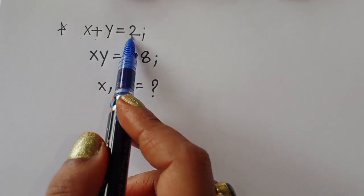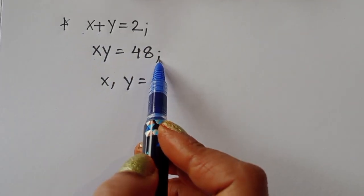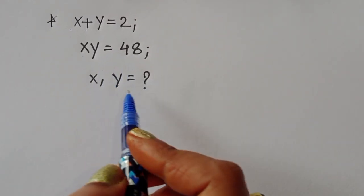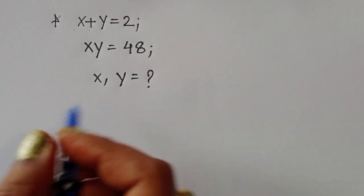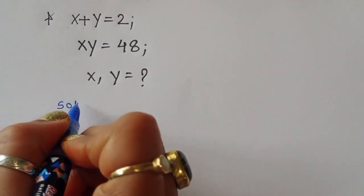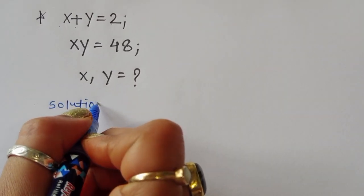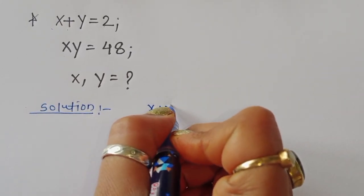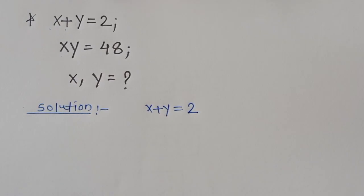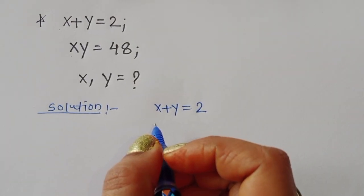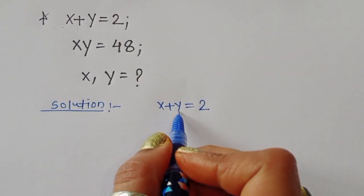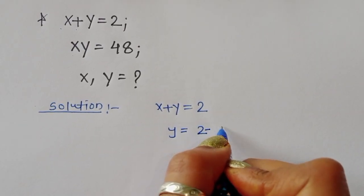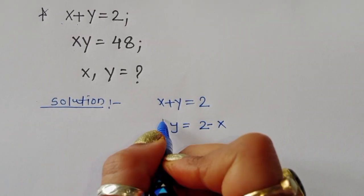The question gives us x plus y equal to 2 and xy equal to 48, and we have to find the value of x and y. Let's see the solution. From x plus y equal to 2, we can write y equal to 2 minus x. This is equation 1 for x plus y, and equation 2 for y equal to 2 minus x.